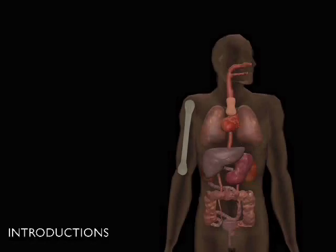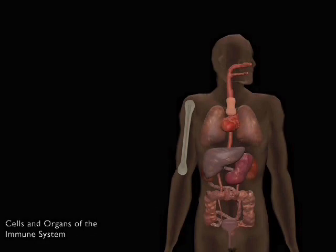The immune system has evolved to protect us from pathogens, including bacteria, viruses, and parasites.